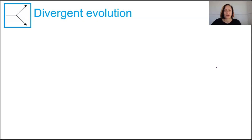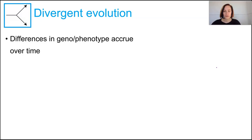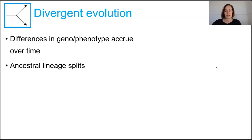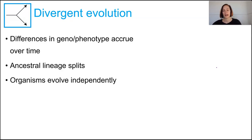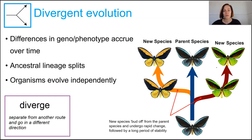Divergent evolution occurs when differences in the phenotype and genotype of an organism accrue over time, eventually reaching a critical point where so many changes have accrued that gene flow stops, and mutation, natural selection, and genetic drift all change allele frequencies independently. Speciation occurs, the ancestral lineage splits, and organisms begin to evolve independently due to different selection pressures in their respective environments, diverging on separate evolutionary pathways.